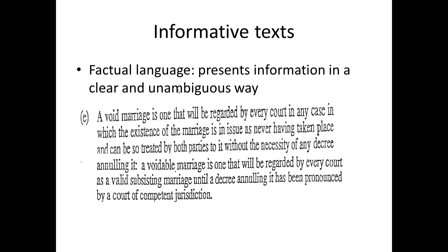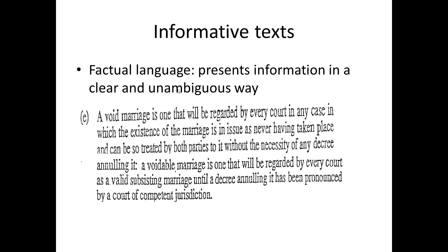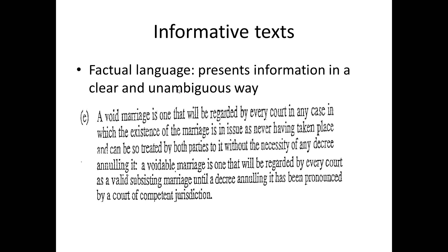A characteristic of many types of factual language, such as scientific and legal language, is the need to present information in a precise and unambiguous way. Look at the following example: 'A void marriage is one that will be regarded by every court in any case in which the existence of the marriage is an issue as never having taken place, and can be so treated by both parties to it without the necessity of any decree annulling it. A voidable marriage is one that will be regarded by every court as a valid subsisting marriage until a decree annulling it has been pronounced by a court of competent jurisdiction.' This text is phrased in a particular way in order to eliminate any possible ambiguities or possibilities for different interpretations. Everyone who reads it needs to come away with the same understanding of what the terms 'void marriage' and 'voidable marriage' mean.